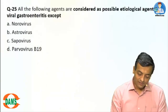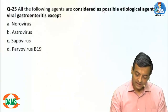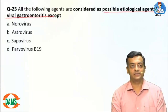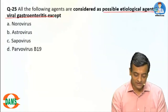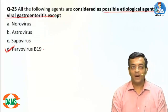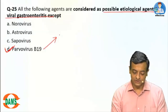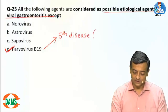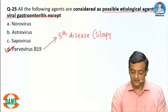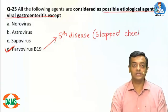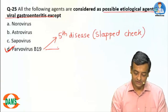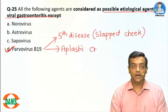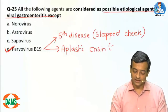Question 25: All of the following agents are considered possible etiological agents for viral gastroenteritis, except Parvo B19. Parvo B19 is associated with fifth disease and slapped cheek appearance. It can lead to aplastic crisis in patients with sickle cell or hemolytic anemia.